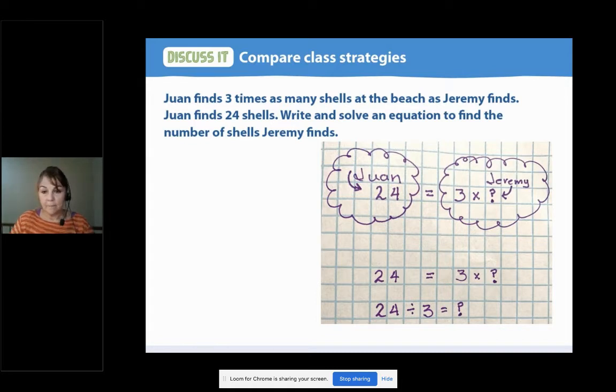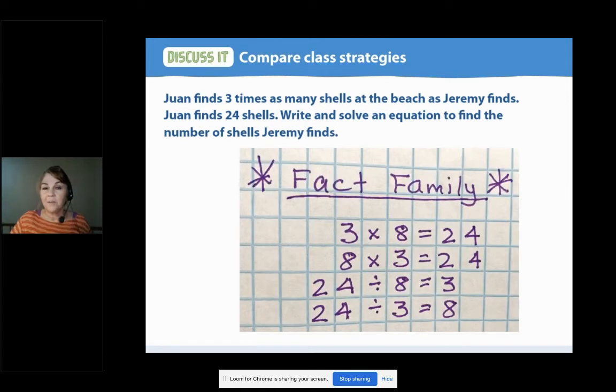You might have said that they are the same because the unknown, the question mark, equals the same number in both equations. Yep, that's good thinking. You might have said that they're different because one equation is multiplication and the other is division. Yep, that is very true. And you might have said it reminded you of fact families. Yeah, you've seen these before, right? Let's read through these together. Ready? 3 times 8 equals 24. 8 times 3 equals 24. 24 divided by 8 equals 3. And 24 divided by 3 equals 8. Great.